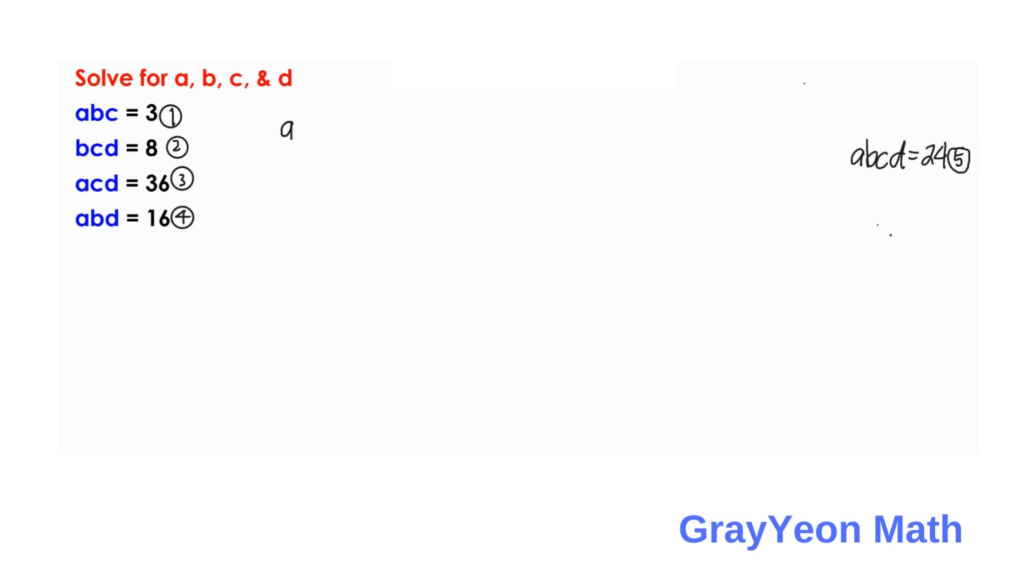For variable a, we need to divide equation 5, abcd, by bcd. So, a is equal to 24 over bcd. That is equation 2, that is 8. So, a is equal to 3.